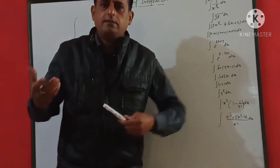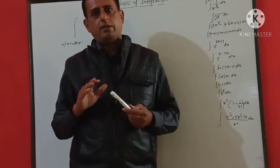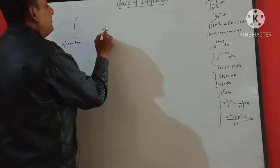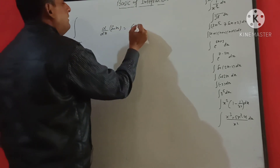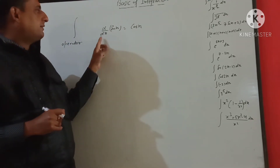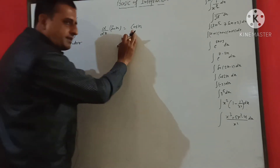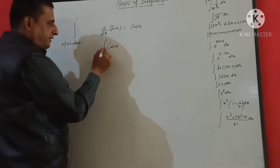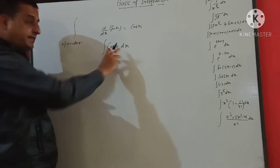What is integration? In a way, it is in reverse order. Integration is the reverse order of differentiation. For example, suppose we take d/dx of sin x — what will we get? We get cos x. So if sin x differentiation gives cos x, think about cos x integration. We write the integration symbol and write it with dx. This is the integration.